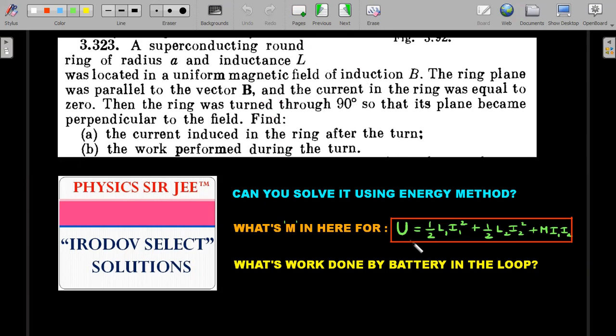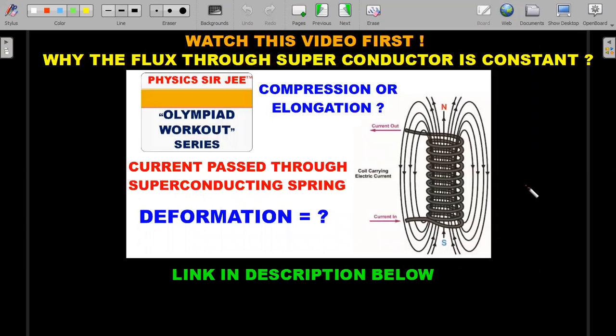In the context of the solution we'll also discuss the work done by the battery in the loop and the mutual inductance in this particular situation. Those solving only with the torque method won't see the insight of these last two questions, so please wait for the second method. Before starting, if you're new to this channel, I'd request you to first go through a prerequisite video explaining the basics of superconductors required for 12th class and Olympiad students — and also for JEE Advanced, as this concept is touched upon in the topic of EMI.